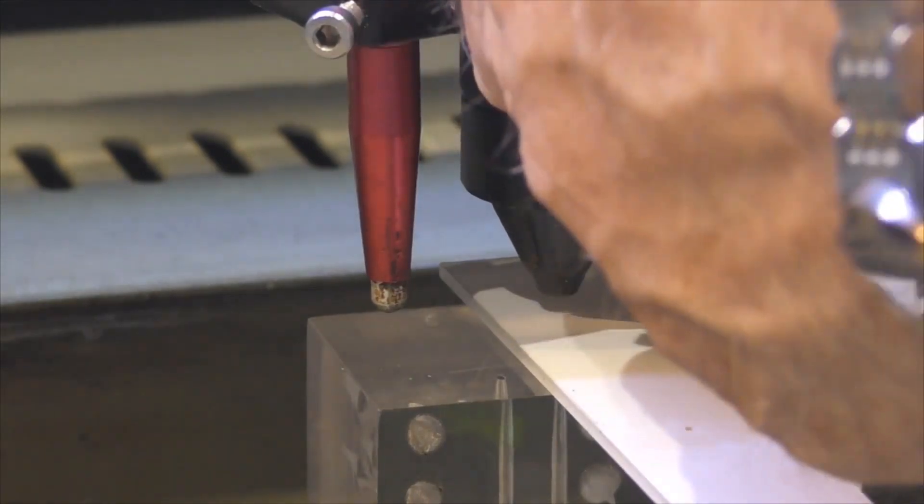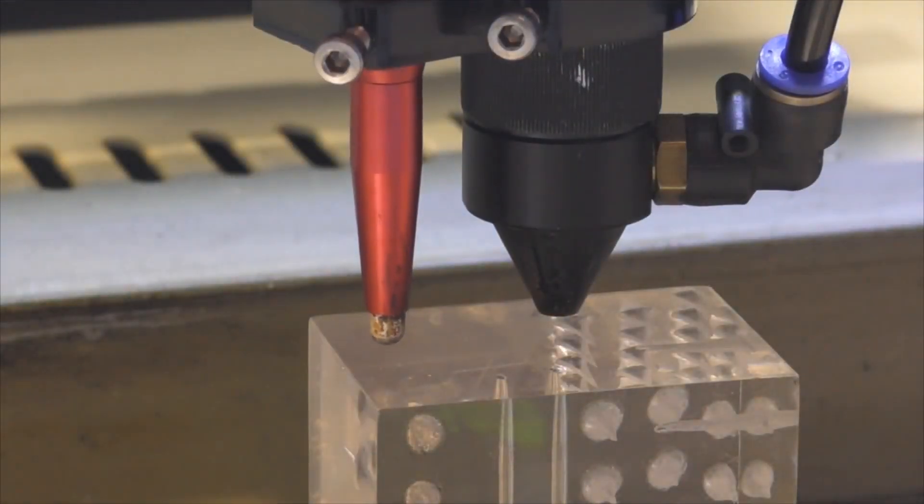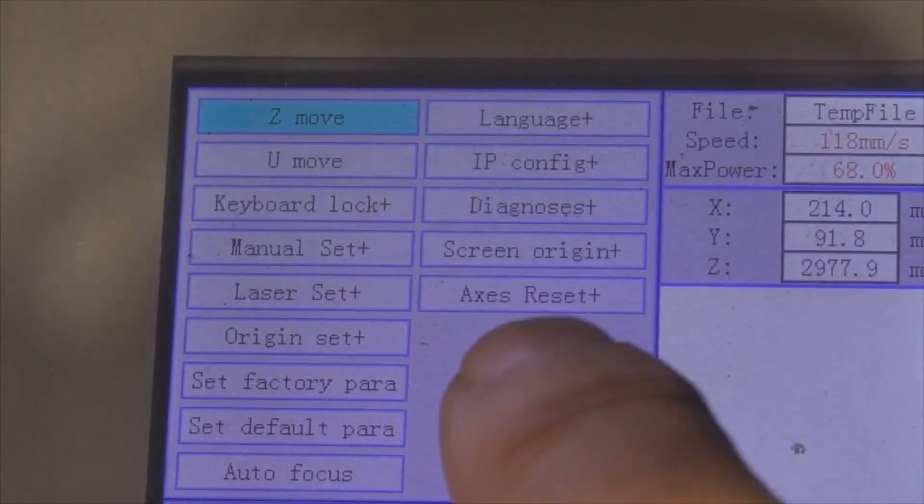So I'm going to drop the nozzle down onto this piece of two millimetre material. I've loosened the pen off so that I can move it up and down, and on the keyboard just here